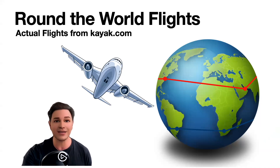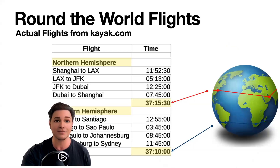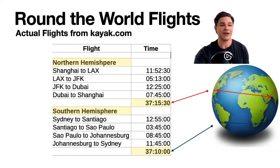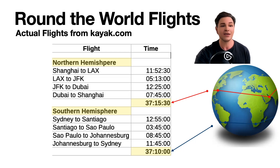You can go to kayak.com and look at two examples of round-the-world flights — one in red around the Northern Hemisphere, one in blue around the Southern Hemisphere. In the Northern Hemisphere, we're going from Shanghai to LAX to JFK to Dubai and back to Shanghai, all the way around the world.